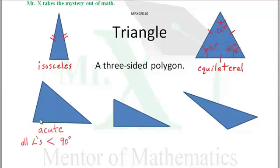An acute triangle has three angles, all less than 90 degrees.